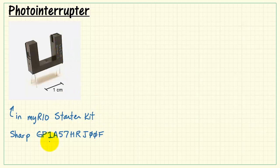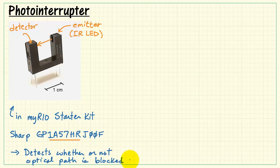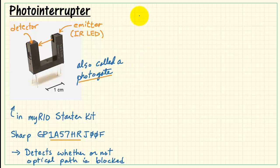On the side here you'll see a portion of the full part number. This is called a photo interrupter, which means there's an optical light path established between the emitter and the detector. The emitter is an infrared LED, so you won't actually see anything. But the detector is also sensitive to infrared radiation and detects whether or not the optical path is blocked. The photo interrupter is also referred to as a photo gate.